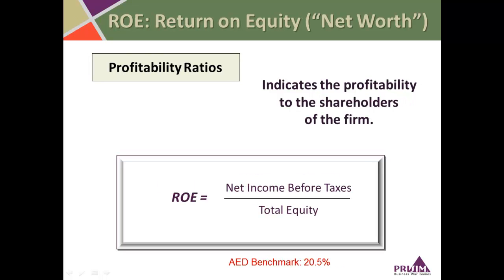Return on equity shows how the capital contributed by shareholders — and capital retained in the business — is generating profit. It's calculated as net income before taxes divided by total equity. The AED has about 20% as a benchmark for a heavy equipment distributor, meaning you're generating 20 cents of profit before taxes for every dollar of total equity that the owners have invested in the business.